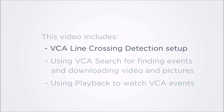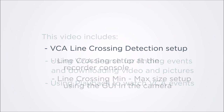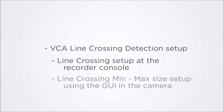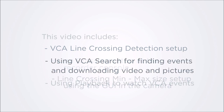Setting up line crossing detection for these cameras is a two-step process. First, we'll perform the initial setup using the recorder console, and then we'll log into the recorder and camera with a browser to set the minimum and maximum size of the object crossing the line against the background of the camera's field of view.